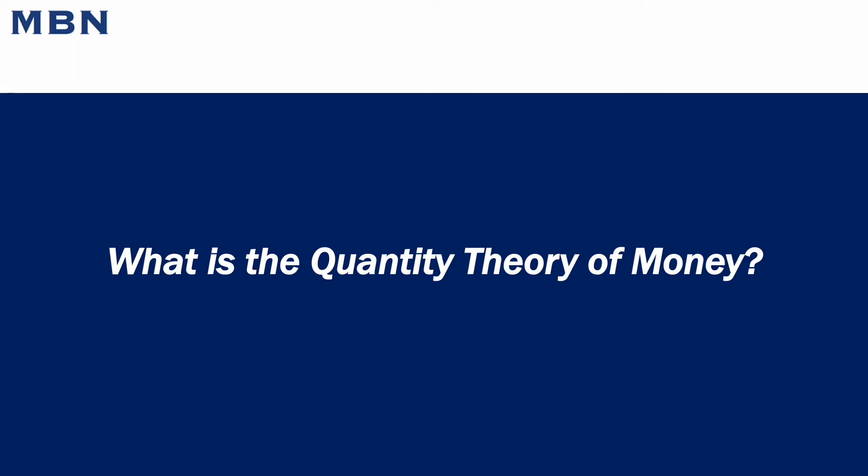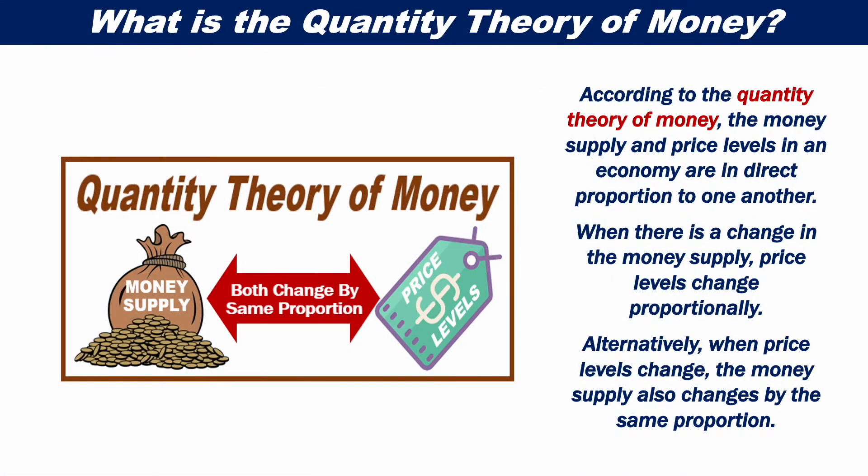What is the quantity theory of money? According to the quantity theory of money, the money supply and price levels in an economy are in direct proportion to one another. When there is a change in the money supply, price levels change proportionally.